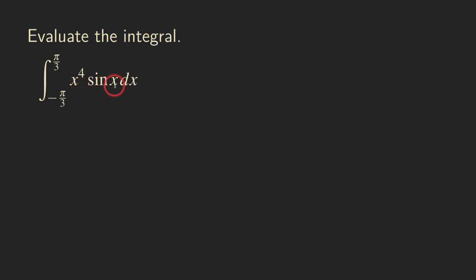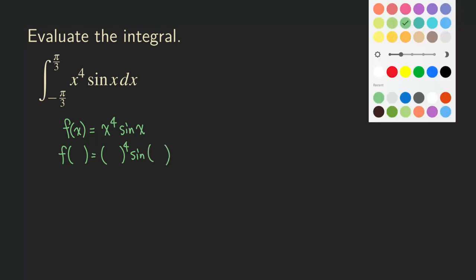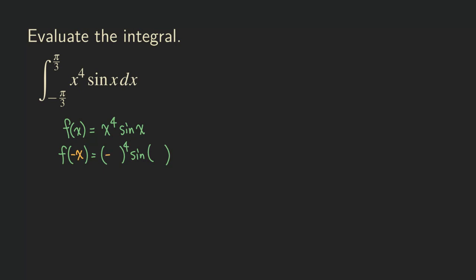One thing that we need to check here is — let's let f of x be this integrand. So it would be x to the fourth times sine of x. We want to check whether this function is even or odd. We actually need to plug in negative x in there to check this. So if we plug in negative x, then we are going to get negative x quantity raised to the fourth, and then sine of negative x.